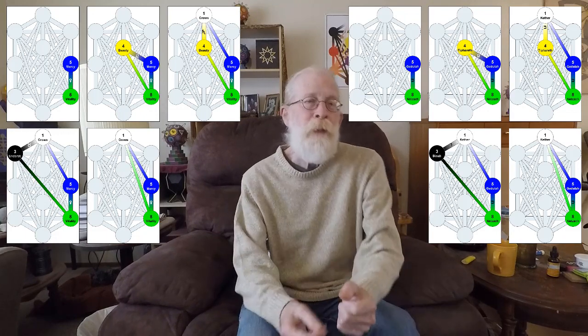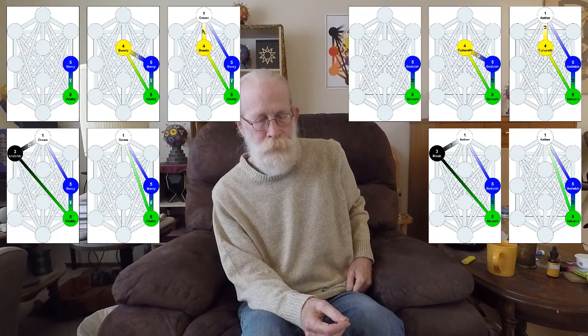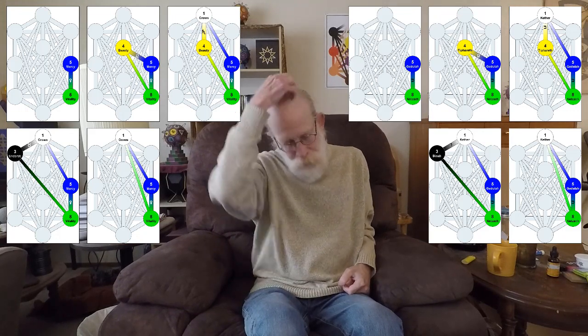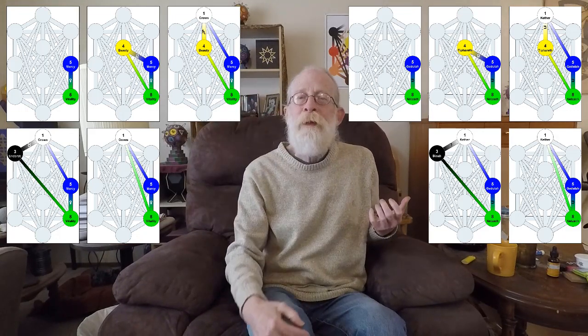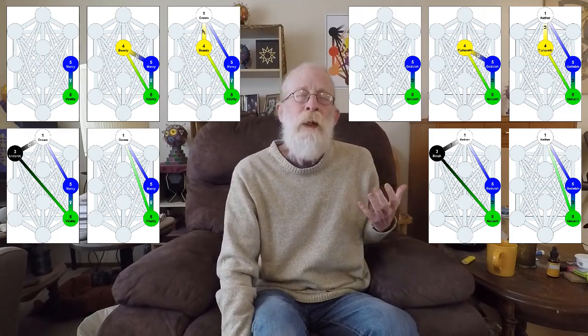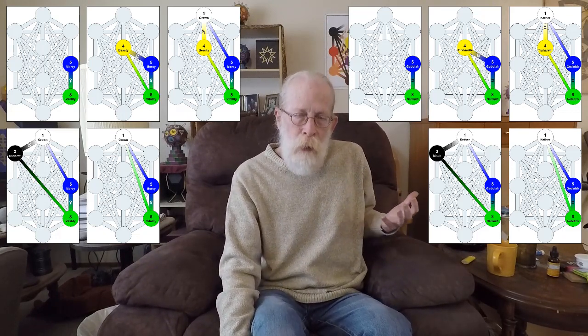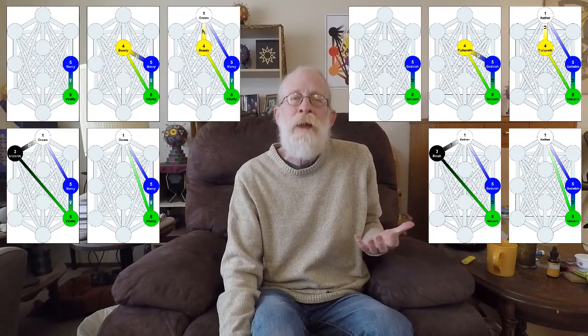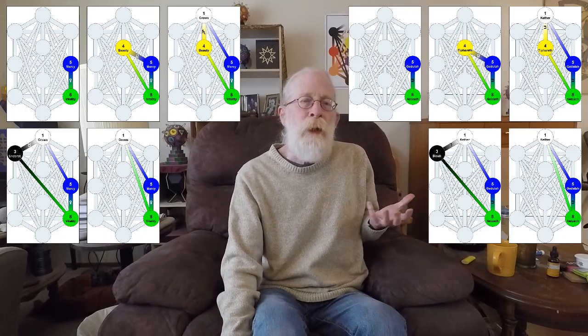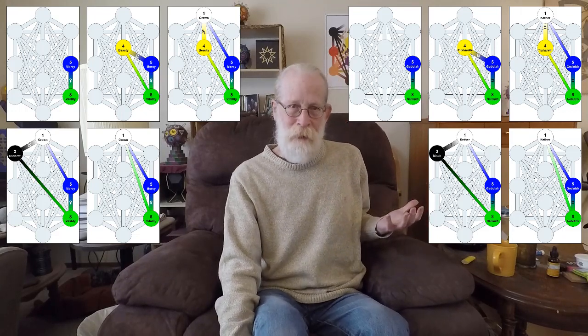This path leads from Gedjula to Netzach, from mercy to vitality, from the center of the pillar of mercy to the bottom of the pillar of mercy. Gedjula, the collective awareness, the collectivity of awareness, occurs within the mental realm of subjective meaning.